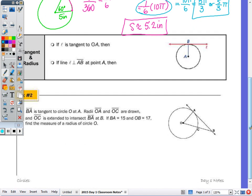Now let's look at the relationship between a tangent and a radius. If L is tangent to circle A, then L is perpendicular to radius AB. If L is perpendicular at that point, then L is tangent to the circle. A tangent line is perpendicular to the radius at the point of tangency.